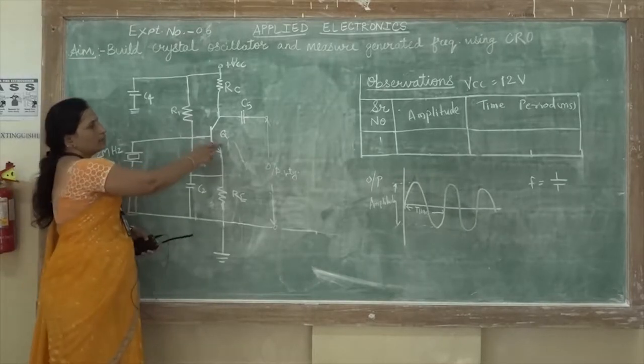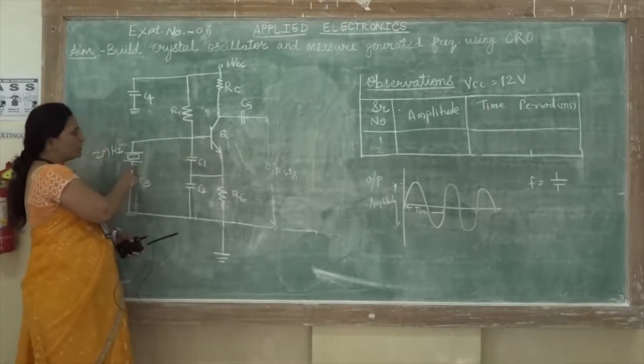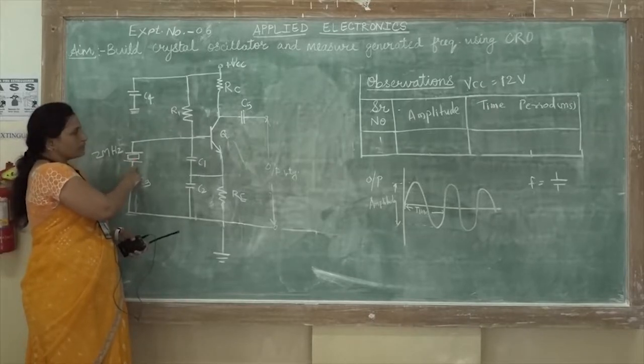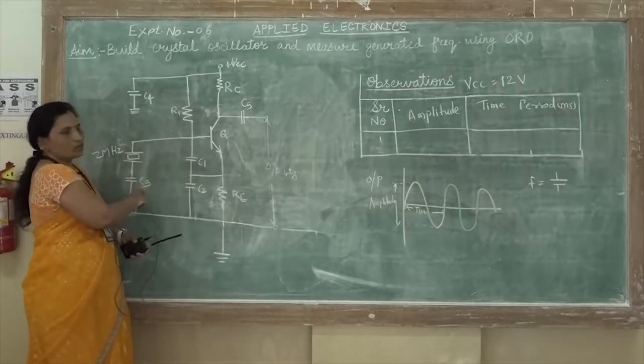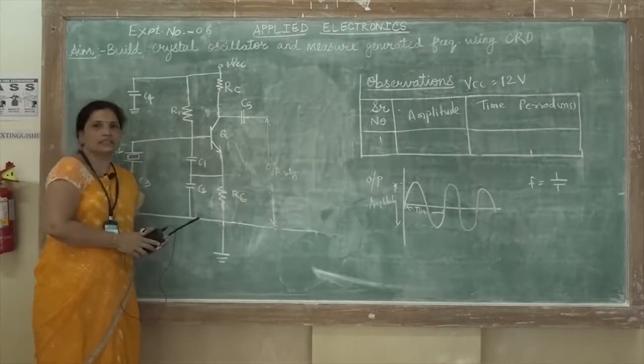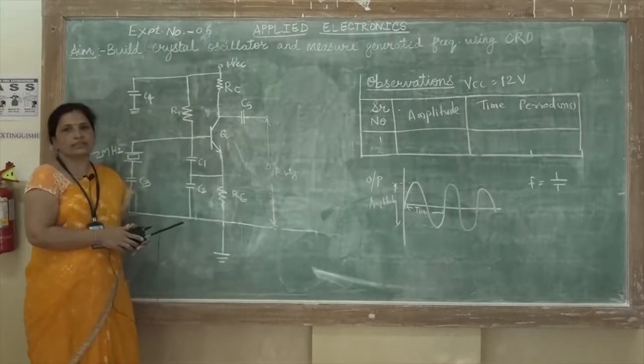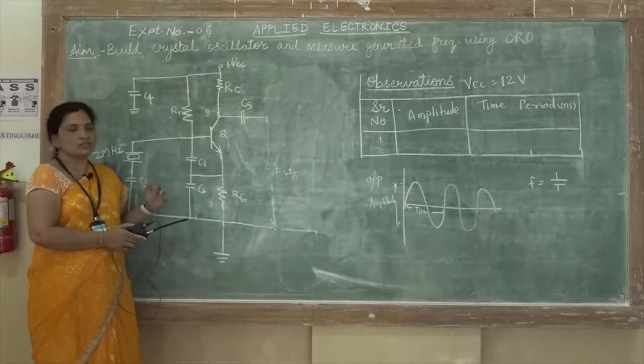This amplifier will make 180 degree phase shift while in this feedback network it will make 180 degree phase shift. Total phase shift around the loop is equal to 360 degree. It is going to generate the oscillations as it is the Barkhausen's criteria.